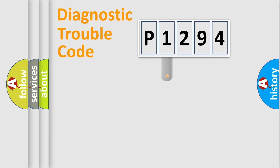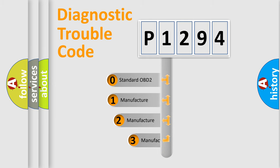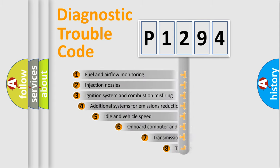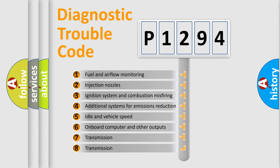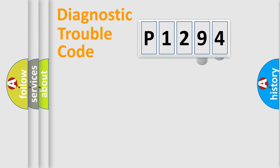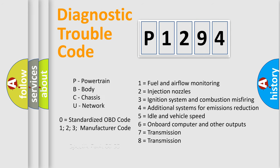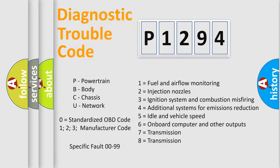This distribution is defined in the first character of the code. If the second character is expressed as zero, it is a standardized error. In the case of numbers 1, 2, or 3, it is a more specific expression of a car-specific error. The third character specifies a subset of errors. The distribution shown is valid only for the standardized DTC code, and only the last two characters define the specific fault of the group. Such a division is valid only if the second character code is expressed by the number zero.